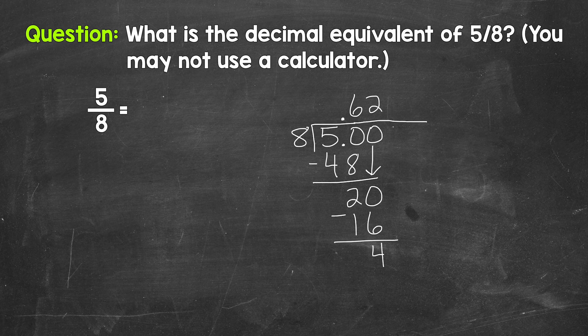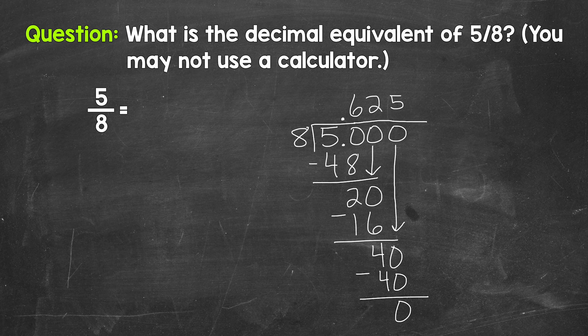So we still don't have that clean cut zero there at the bottom. So let's use another zero that we can bring down. And now we have 40. 40 divided by eight, which is five. So we put five up here. Multiply. Five times eight. 40. Subtract. 40 minus 40 is zero.